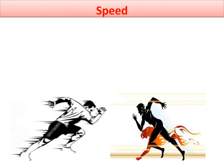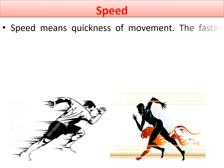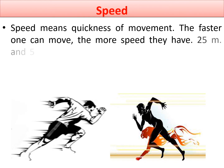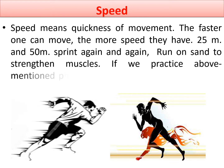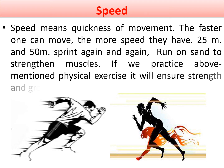Another important component of physical fitness is speed. Speed means quickness of movement — the faster one can move, the more speed they have. You can improve speed by running 25 meters and 50 meters repeatedly, and running on sand to strengthen muscles. Gaining more leg muscle strength helps gain more speed. The ideal examples of speed in athletics are the 100-meter sprint, 200 meters, and 400 meters.